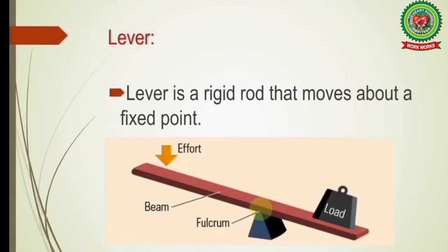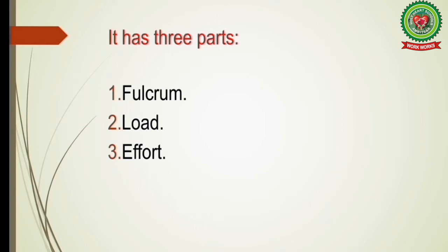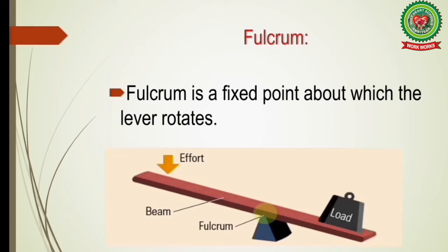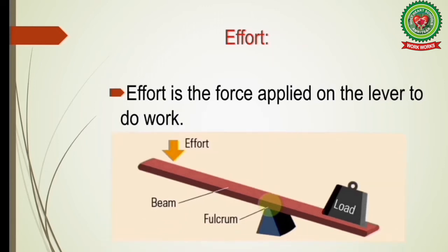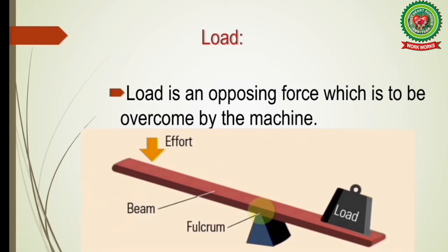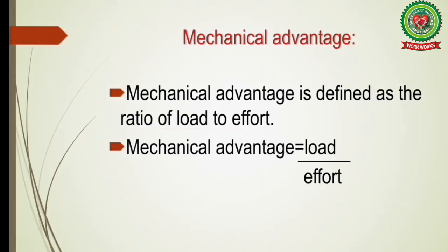Note down the definition: a lever is a rigid rod that moves about a fixed point. It has three parts — fulcrum, load, and effort. The fulcrum is the fixed point about which the lever rotates; effort is the force applied on the lever to do work; and load is the opposing force which is to be overcome by the machine.